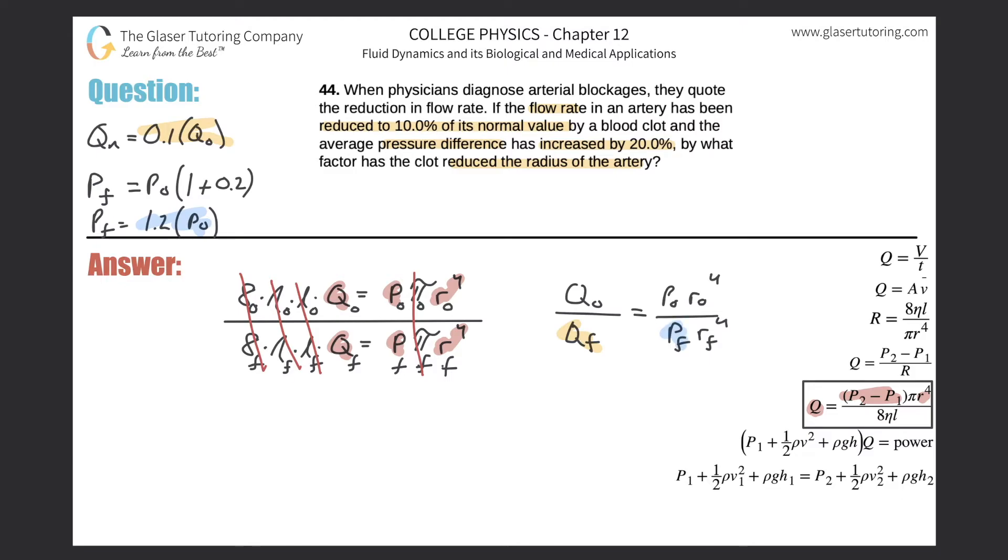And now what is it asking? It's asking by what factor has the clot reduced the size or reduce the radius of the artery? So what I'm really looking for is I'm really looking for this ratio, but I'm probably looking for the reciprocal of it since they want me to find that final value. But don't worry about that for now. Let's just try to plug this all in. And I'm going to do one other thing here when I organize those R's raised to the fourth.